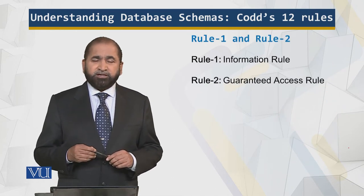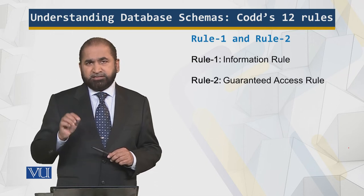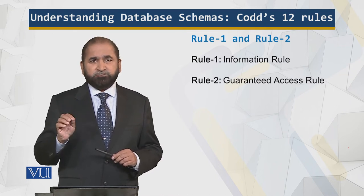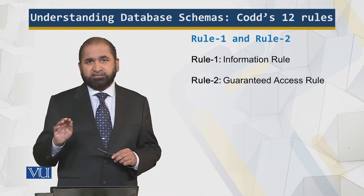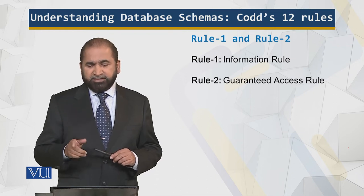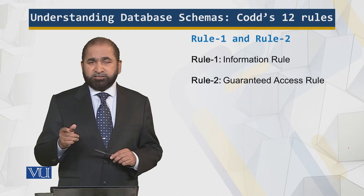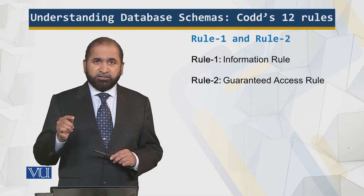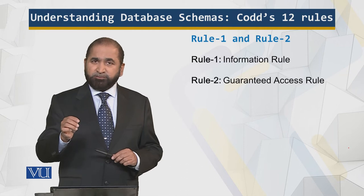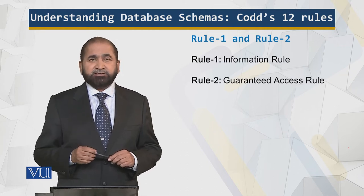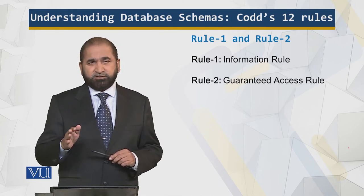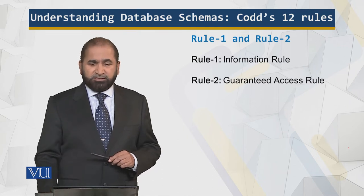The information rule states that the data which is stored in a database will be stored in a table, stored in a cell. A cell is a cross-section of a row and a column. More details in the next module. The guaranteed access rule means that using the primary key, the table name, and the desired column, I should be able to get what I want — that is the guarantee. This rule, rule number one, is implemented in all relational models.